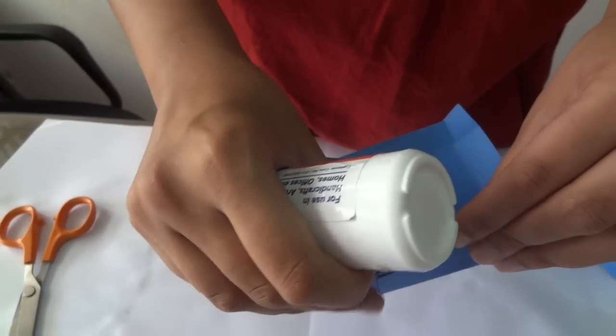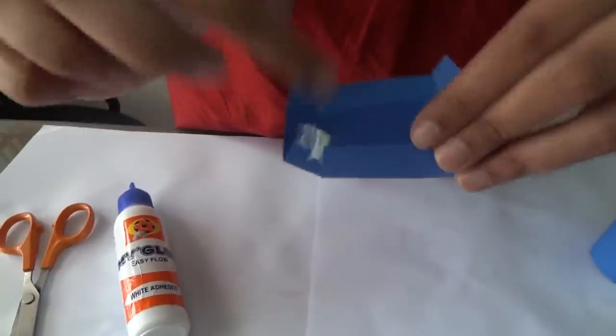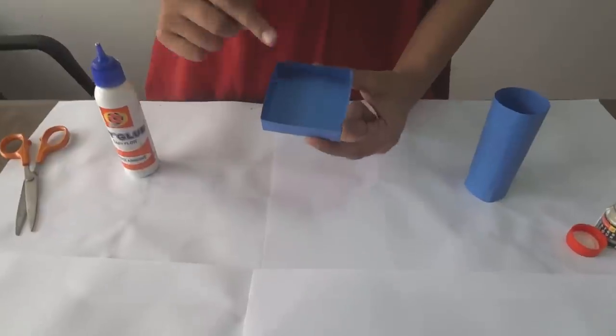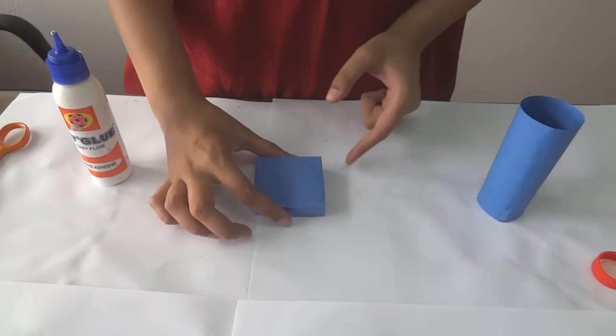Do this on all the four borders. Again this will go like this. So put Fevicol and like this. Once you repeat the process on all four corners you will get a box like this. Just invert it and keep it here.